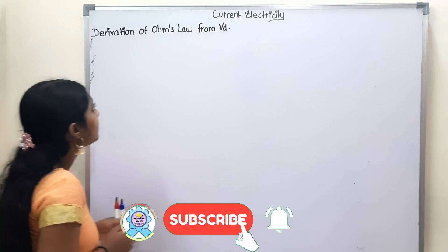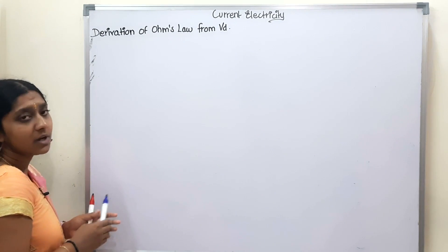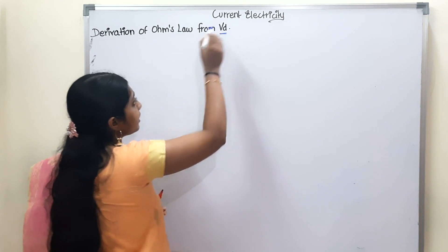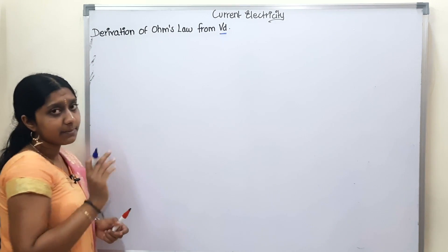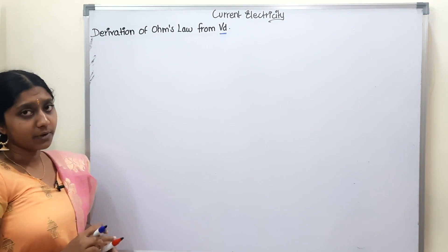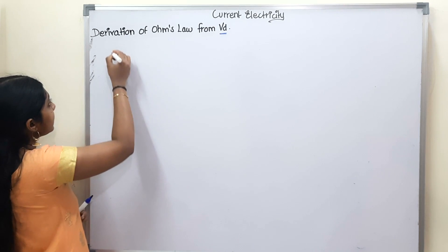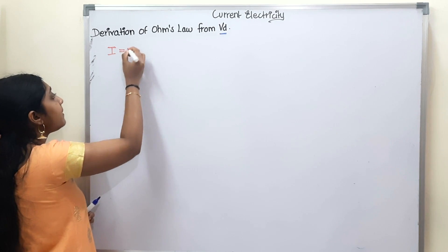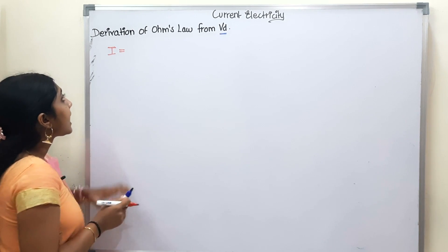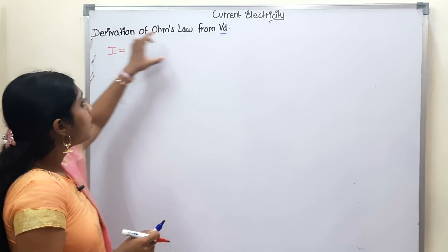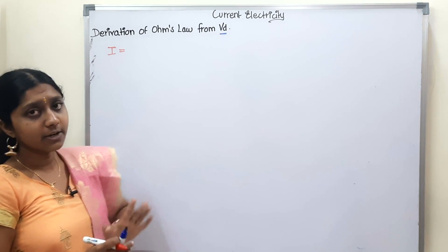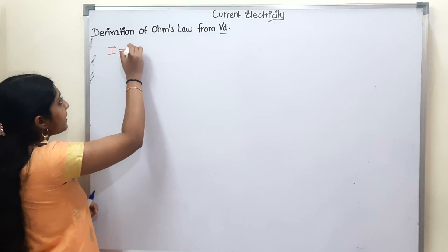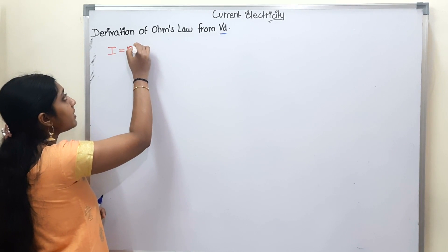Now we will derive Ohm's Law from drift velocity VD. First, what is the current formula? We will derive the drift velocity relation. What is the formula from the previous video?